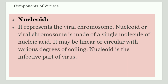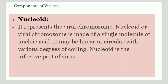First, we will discuss about nucleoid. It represents the viral chromosomes — a nucleoid is a viral chromosome. It is made up of a single molecule of nucleic acid, which is either RNA or DNA. A nucleoid may be linear or circular in shape, and it has various degrees of coiling.